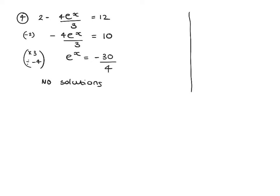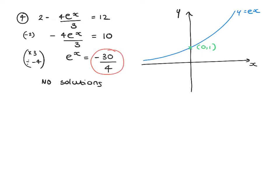Think about the graph of y equals e to the x — it crosses the y-axis at 1 and is always positive. If we want e to the x to equal negative 7.5, there are clearly no intersections. E to the x cannot equal a negative number, so we can say very clearly that e to the x is greater than zero for all values of x.